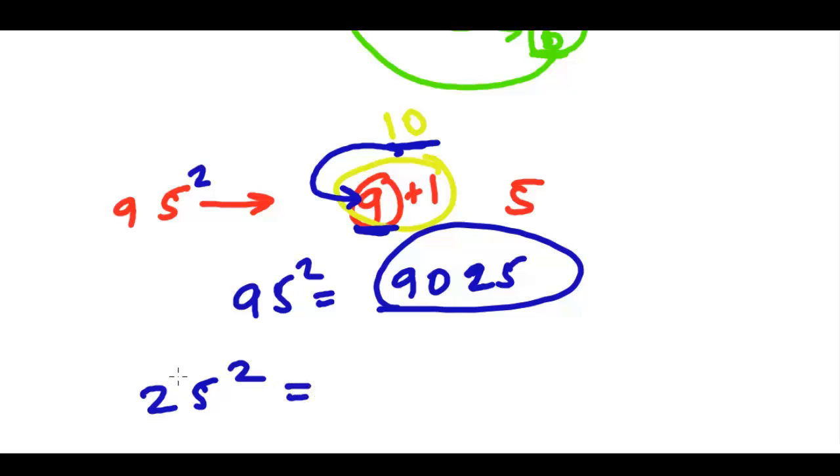Let's say 25 square. So now I can easily calculate just by looking at it. So 2 plus 1, that is 3, and 3 times 2 will be 6, and 6 plus this 5 square, that is going to be 625.